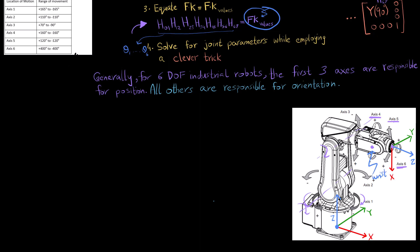The first three rotations are responsible for the position of the wrist, and the next three rotations — or however many there are — are responsible for the orientation of the end effector.